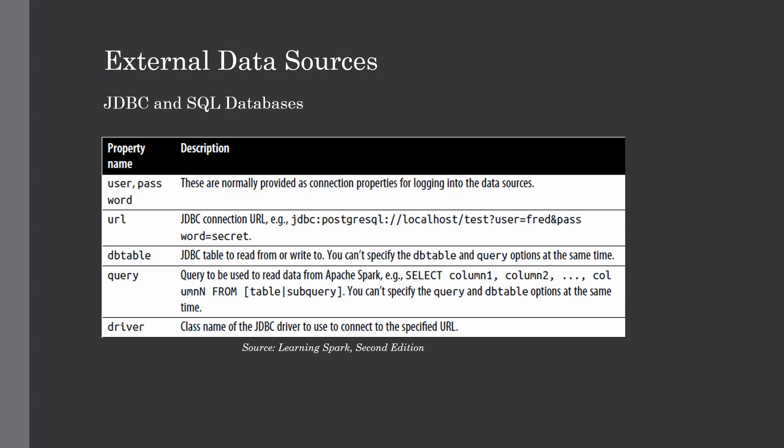Spark's SQL module includes a data source API that can read data from many databases, simplifying querying by returning results as a DataFrame. This provides all the benefits of Spark SQL, including performance and the ability to join data from different sources. Whether you have SQL Server, PostgreSQL, or MySQL, you can integrate multiple databases and join them together as a DataFrame.